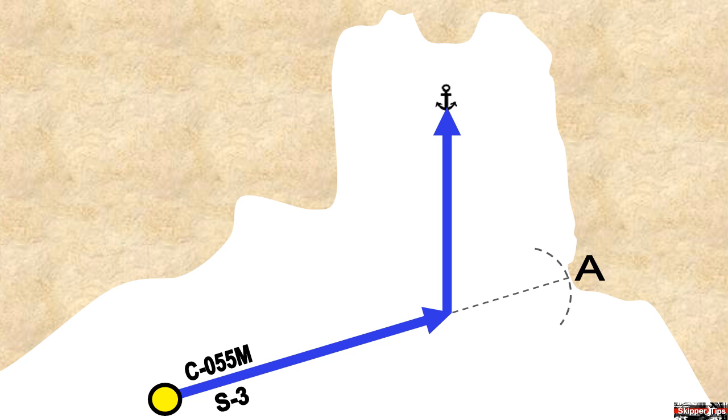We look for a point ahead of the boat to know where to turn. In this case we've chosen point A. We measure this distance with our dividers and write that down. When our radar shows that we are that distance from point A, we can turn north toward the anchorage.